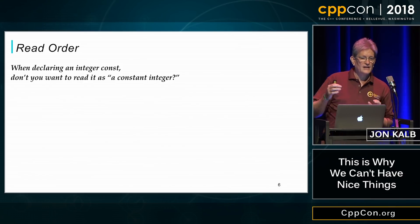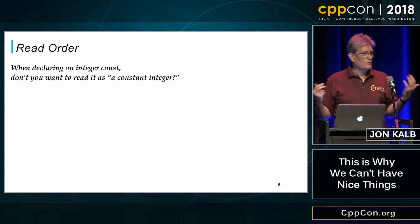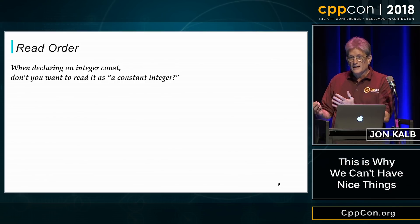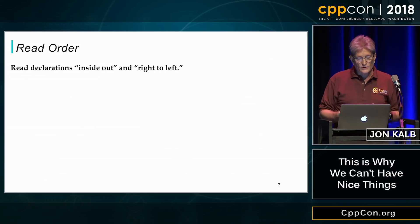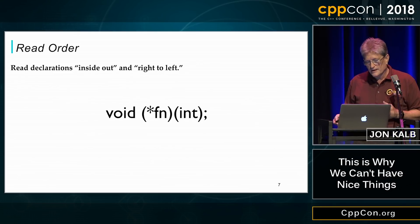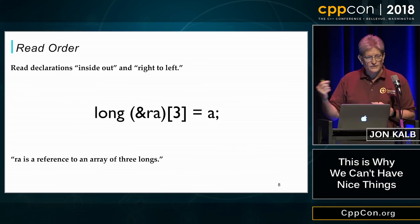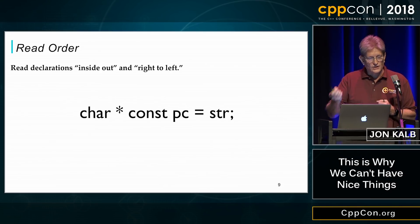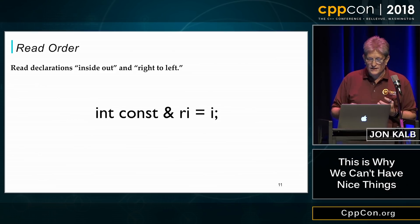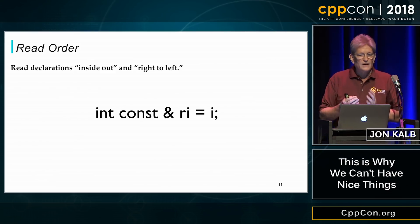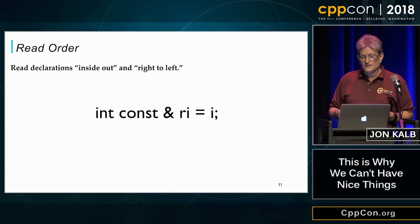But people object to that. They say, wait a minute, I want to read it as a constant integer because I'm an English speaker and I put my modifier in front of my noun. And I agree — I want to do that too. But the assumption you're making is that you're going to read left to right because you're an English speaker. But you're not an English speaker — you're a programmer. And in C and C++, the real order to read declarations is actually inside out and right to left. So for example, fn is a pointer to a function that takes an int and returns a void, and ra is a reference to an array of three longs, and pc is a constant pointer to a character, and pc here is a constant pointer to a constant character, and ri is a reference to a constant integer. I do read it as a constant integer because I'm reading the declaration order the way that, unfortunately, the language syntax calls for us to do.